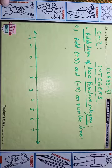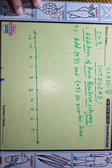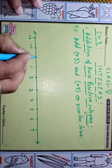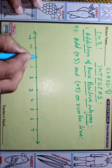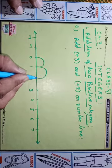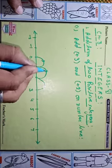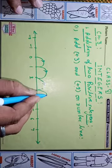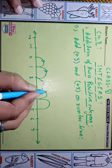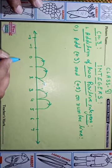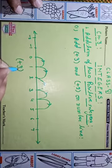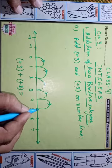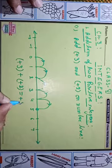For plus three plus two on the number line, we start from zero. Plus three means go to the right side: first place, second, and third — this becomes plus three. Now again, plus two more: one and two. So plus three plus plus two gives us five — this place is five, this becomes plus five.